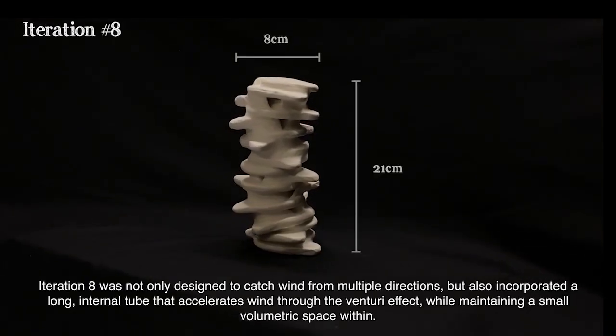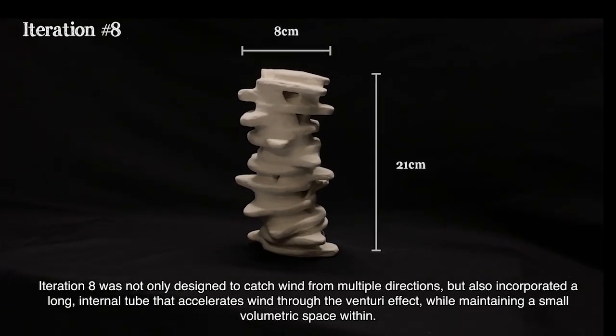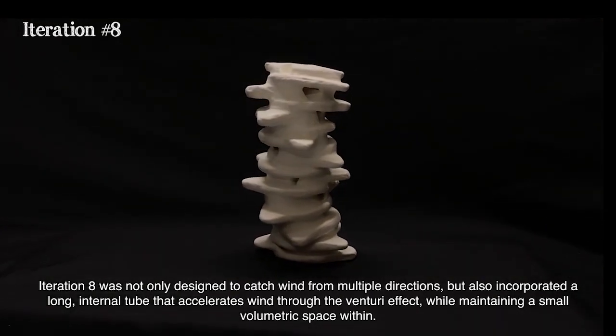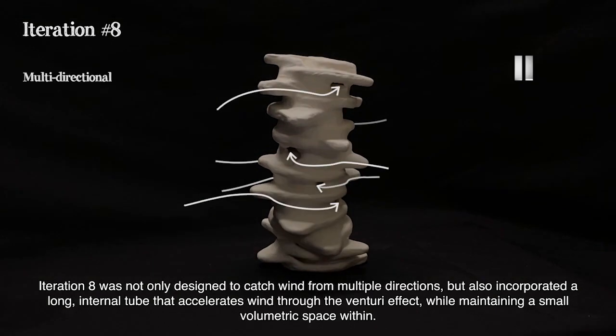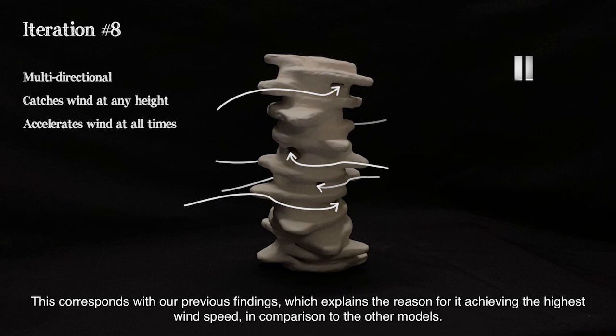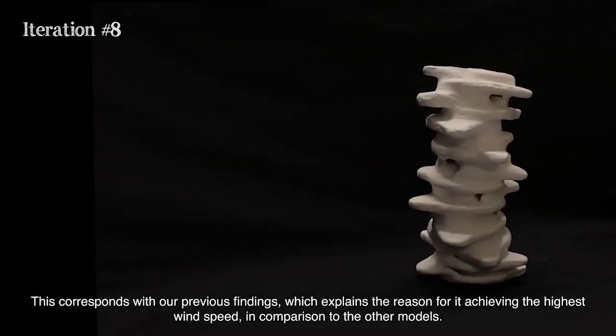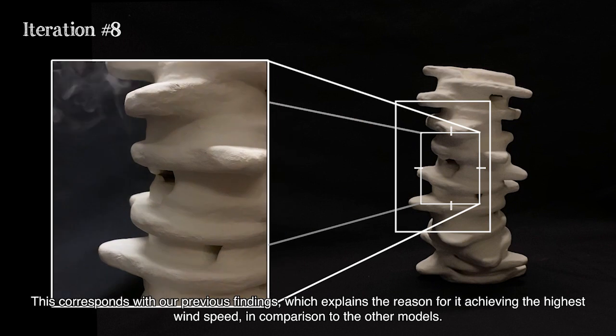Iteration 8 was not only designed to catch wind from multiple directions, but also incorporated a long internal duct that accelerates wind through the venturi effect, while maintaining a small volumetric space within. This corresponds with our previous findings, which explains the reason for achieving the highest wind speed in comparison to the other models.